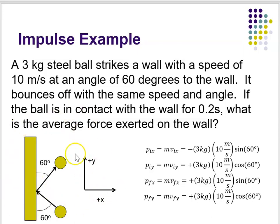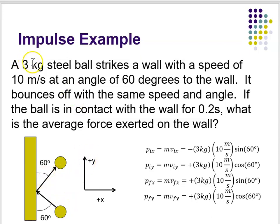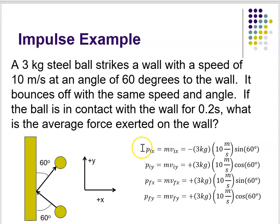After you draw yourself a picture, you need to identify your knowns. In this case, the knowns include the momentum — you can figure out what the momentum is both before and after the collision. Your three kilogram steel ball has a speed of 10 meters per second, and it also gives you the angle. Since momentum is a vector, you can take the mass, three kilograms, times the speed, 10 meters per second, and figure out what the components of your momentum vector are from the 60 degrees. I've shown you that here — x components and y components of your initial and final momentum.